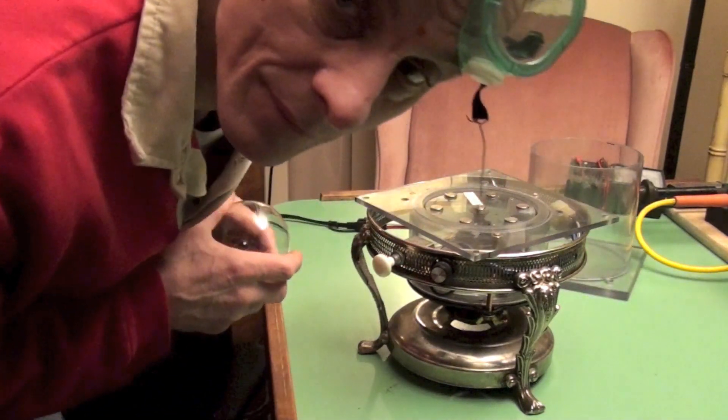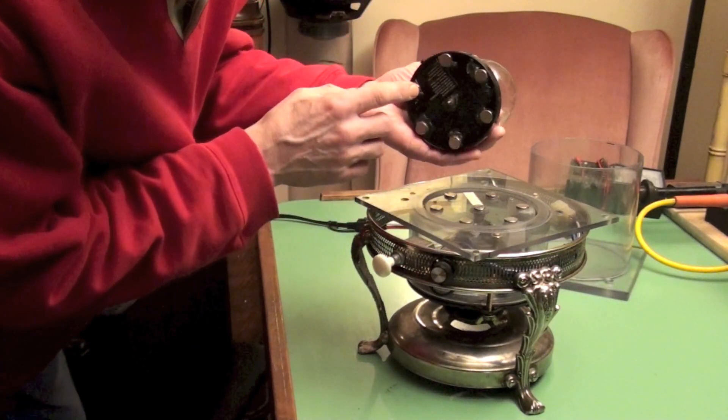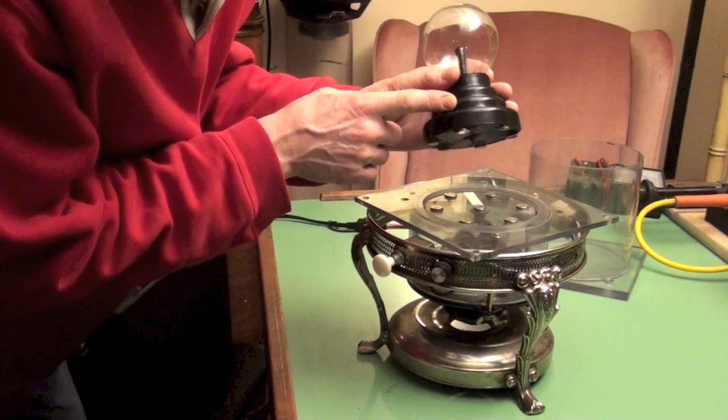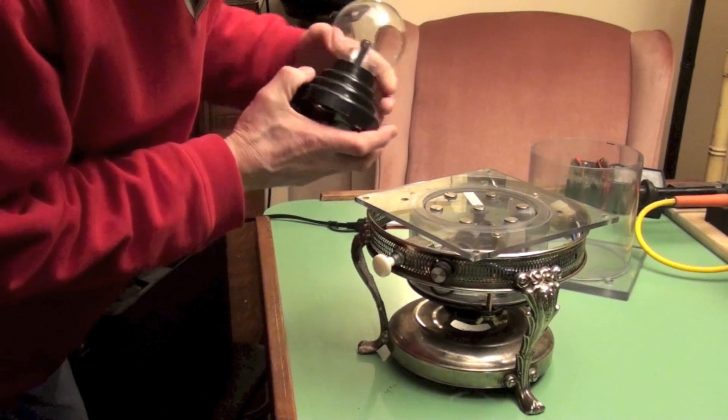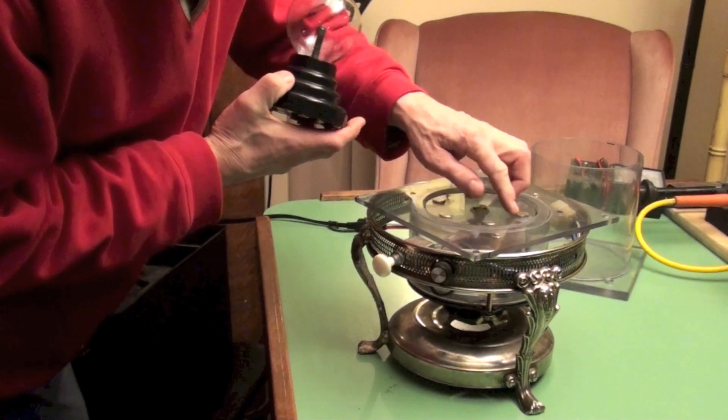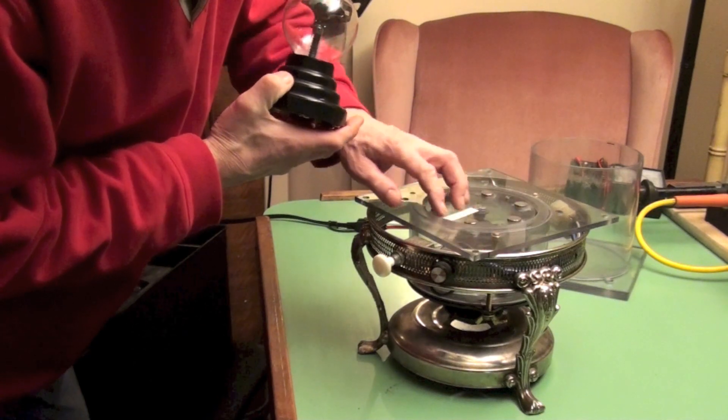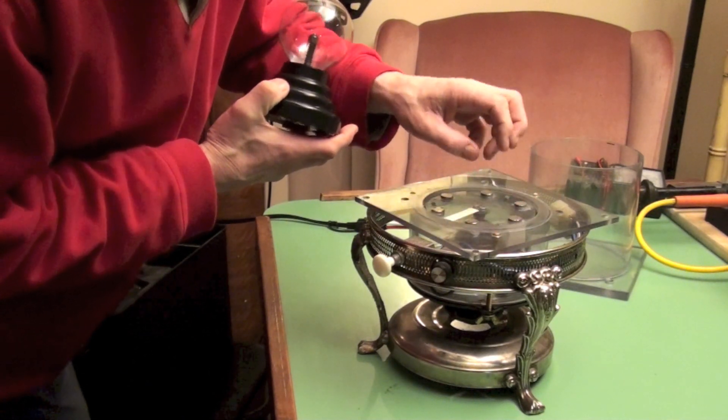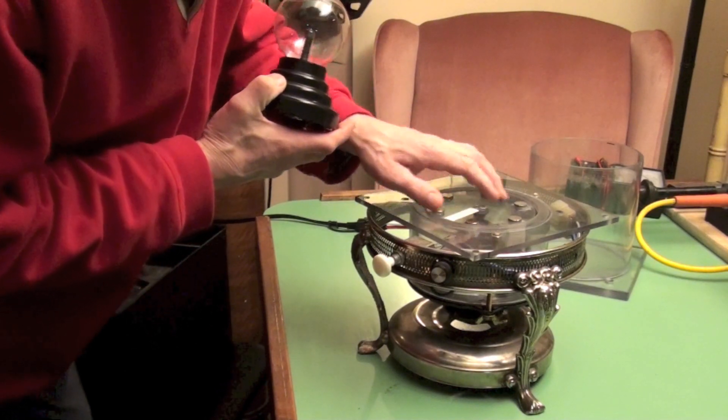We've got six neodymium magnets glued to the bottom of the plasma ball. There are six neodymium magnets also in the top of this rotating disc, which is attached to a 12-volt blower motor.